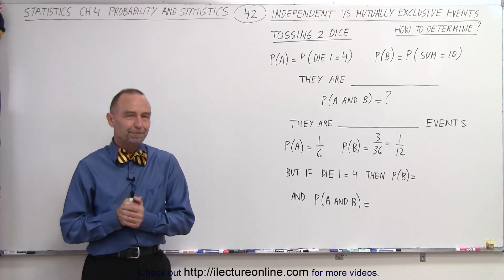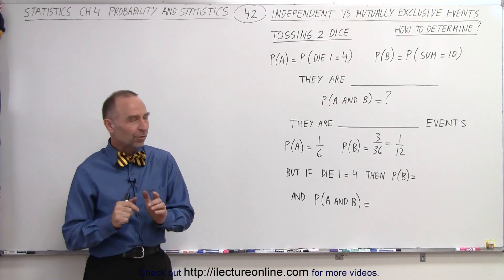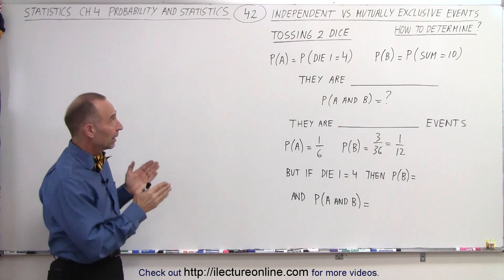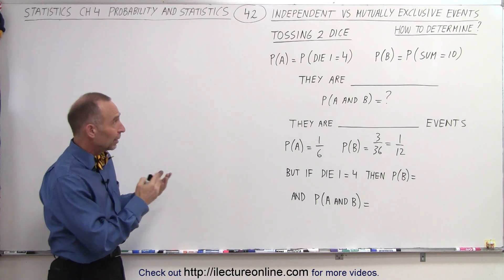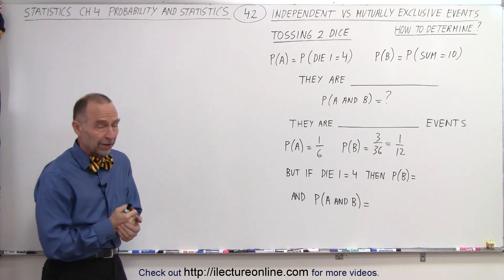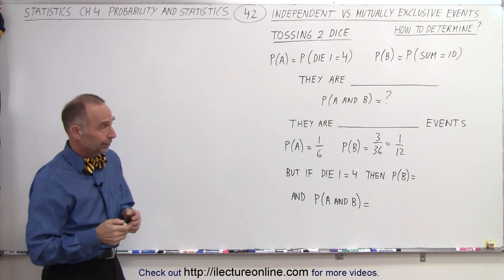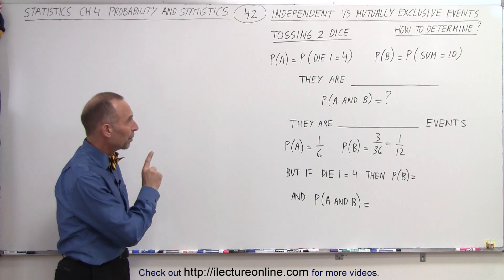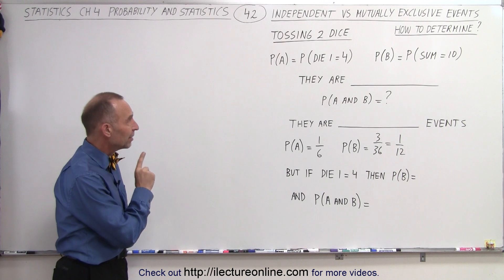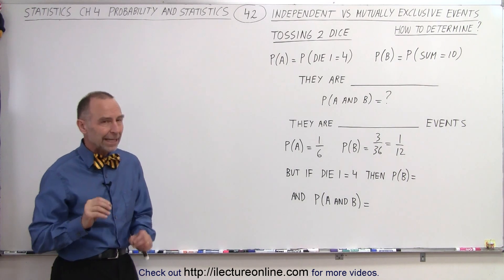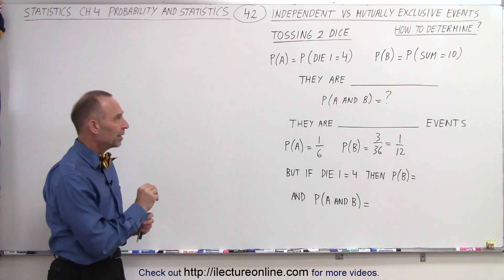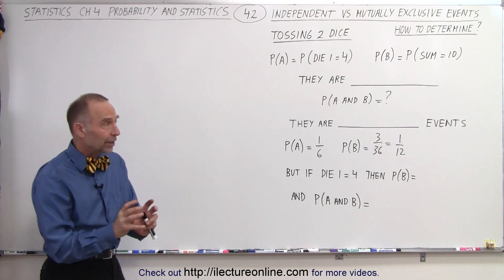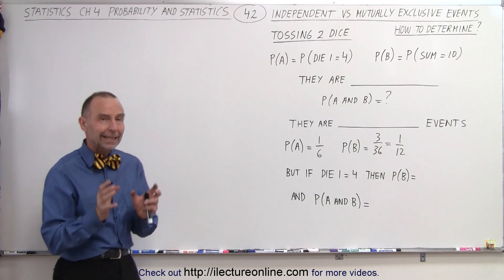Welcome to iLecterOnline. Here's an interesting example where we're trying to figure out if events are dependent, independent, or mutually exclusive. The example involves tossing two dice. The probability of A is equal to the probability that die 1 equals a 4, and the probability of B is equal to the probability that the sum of the two dice equals 10.